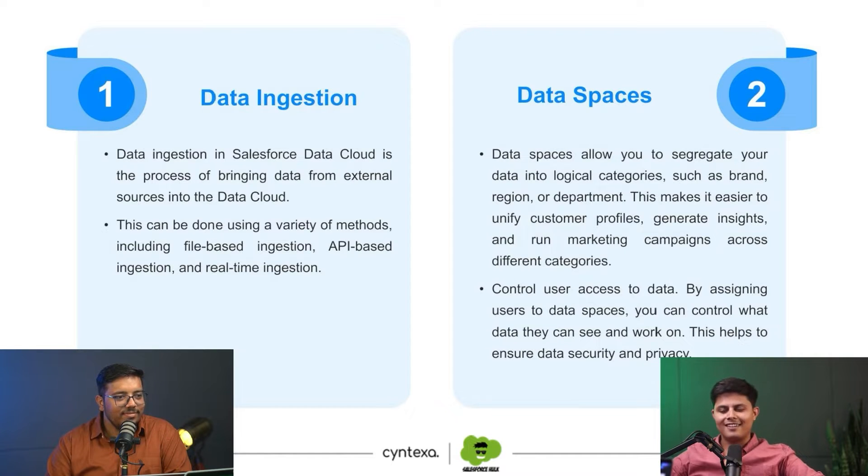Then comes data spaces. Data spaces is a concept that took me some time to understand, but I'll make sure you understand it in a very simple way. Let's understand some key concepts first. There is something called a data lake, something called data spaces, and something called a data model. The data lake is an object in which all of the information gathered from data ingestion gets stored. Think of it like a jar collecting water from different glasses — made of steel, copper, or glass. That jar is the data lake object, and the process of collecting all that water into the jar is called data ingestion.